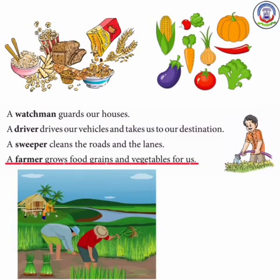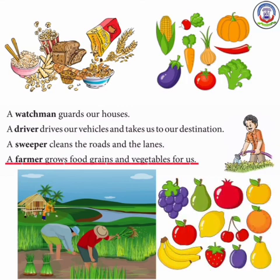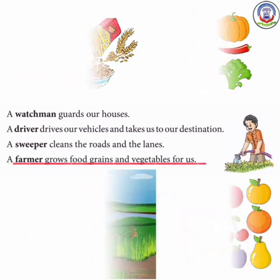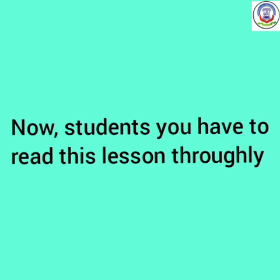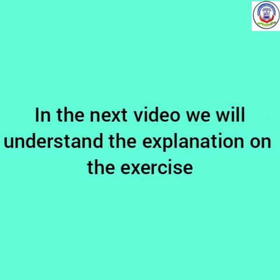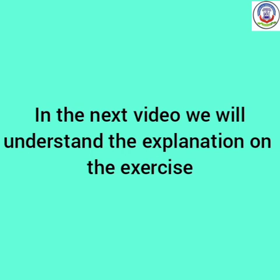A farmer grows food grains and vegetables for us. किसान हमारे लिए अनाज और सब्जियाँ उगाता है, जिसे हम खाकर strong बनते हैं और हमें energy मिलती है। Now students, you have to read this lesson thoroughly. In the next video we will understand the explanation of the exercise.